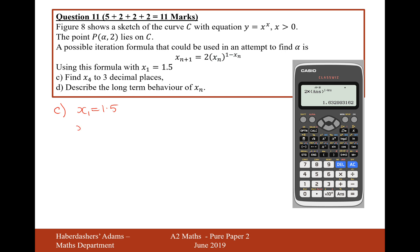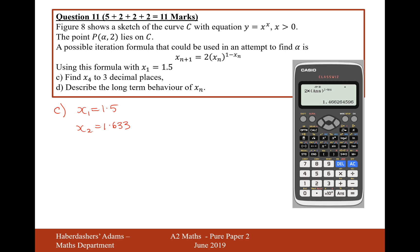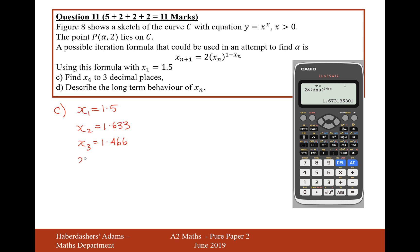And that will give us 1.633 to 3 decimal places. And then we just need to press equals again to get x3. So press equals again. And we get x3 equals 1.466. That's to 3 decimal places again. And then just press equals again to get the next solution. x4 is 1.673. So there we are. That's the answer for x4.